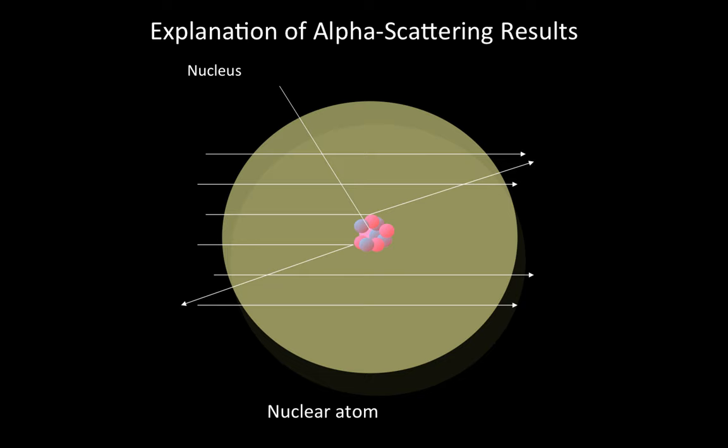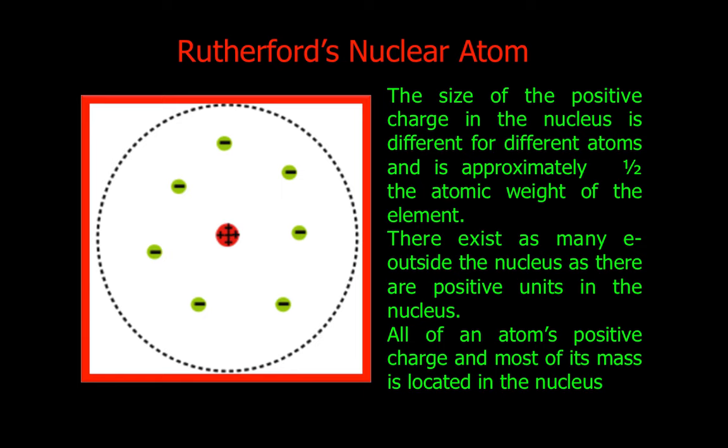Based on his results, Rutherford proposed a new model of the atom, a nuclear atom. In his experiment, Rutherford discovered the nucleus, a small, dense, positively charged central core of an atom. In Rutherford's nuclear atom, he proposed that the size of the positive charge in the nucleus is different for different atoms, and is approximately one-half the atomic weight of the element. There exist as many electrons outside the nucleus as there are positive units in the nucleus. All of an atom's positive charge, and most of its mass, is located in the nucleus.